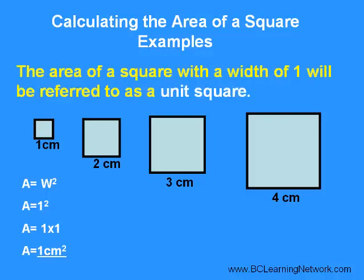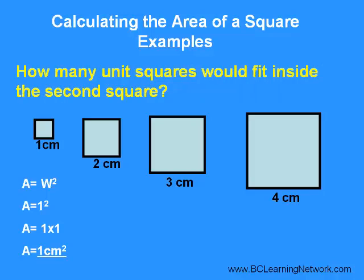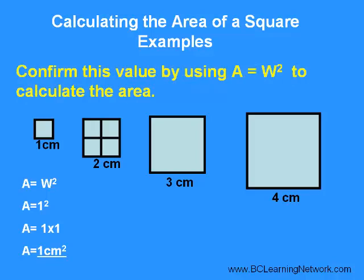Now, I want you to use the area of this first square to help you find the area of these other squares. We're going to refer to the area of this first square as a unit square because it has an area of 1. How many of these unit squares would fit inside the second square? There would be four unit squares that would fit nicely inside.